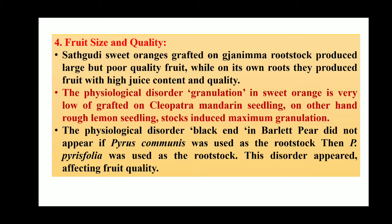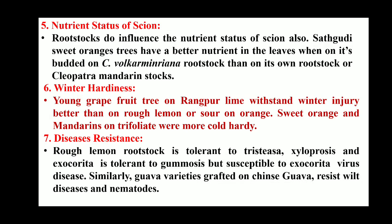The physiological disorder of black end in Bartlett pear did not appear when Pyrus communis was used as the rootstock. By using different rootstock we can have an effect on size and quality. Regarding nutrient status — rootstock does influence the nutrient status of the scion. Whatever the status of the scion is, we have this influence on the final crop after the graft.